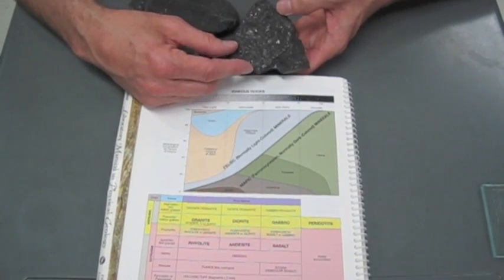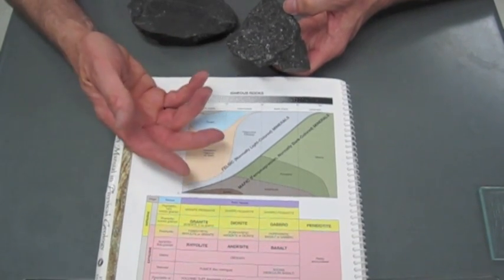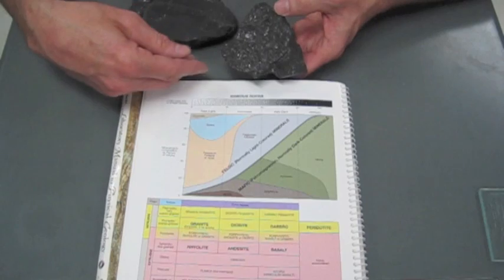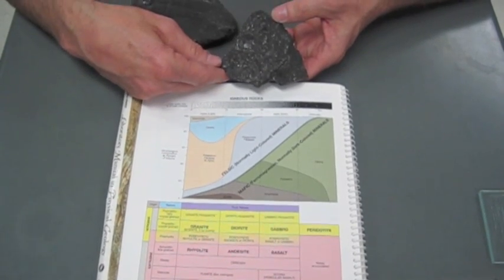Never erupted on the surface, cooled inside the crust, and then brought to the surface by erosion of the overlying rocks. So gabbro is a mafic, coarse-grained igneous rock.